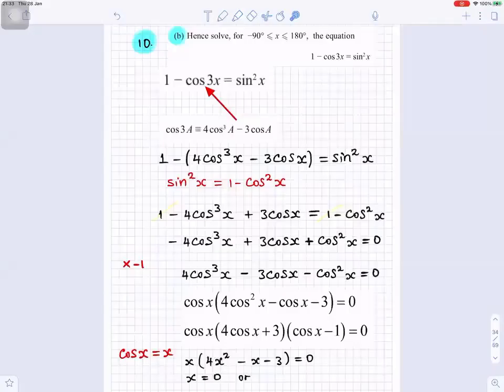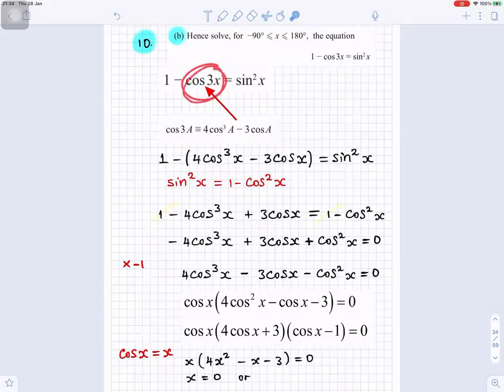Question 10b. Hence, solve between minus 90 and 180 the equation 1 minus cos3x equals sin²x. So, we want to replace cos3x with 4 cos³a minus 3 cosa because we got that from part a. And we're using this word hence. Use your answer from part a. That's what hence means.